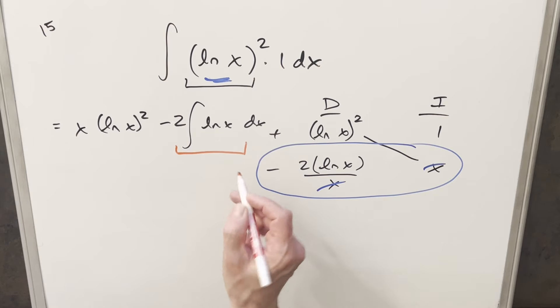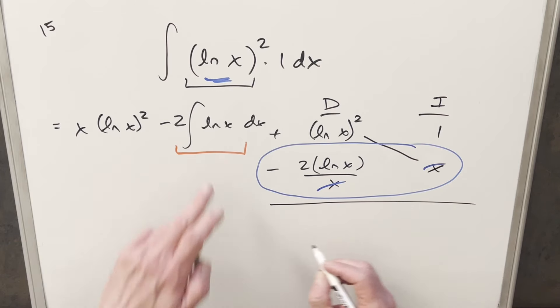But then for this integral here, usually what we do is just use integration by parts again. I oftentimes like to remember the formula, but let's just do the integration by parts really quick. We'll do a separate table and we'll do our DI method one more time. So we'll differentiate natural log x and we'll integrate just 1.